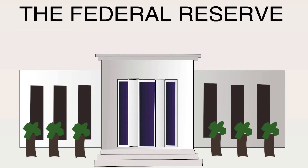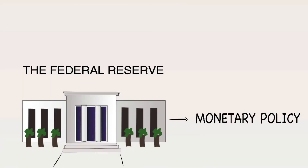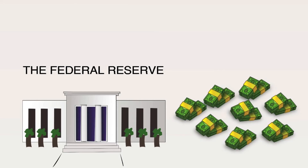So we know the Fed's job is to control economic stability and currency value — but how exactly do they do this? They do this primarily through a process called monetary policy, in which they control the amount of money in circulation in the American economy at a given time.